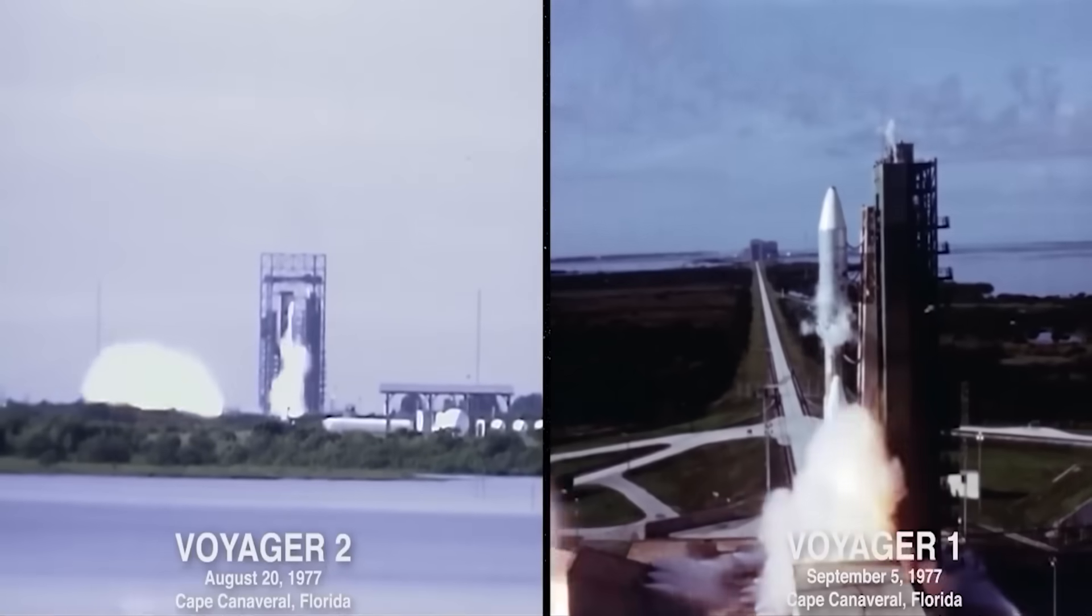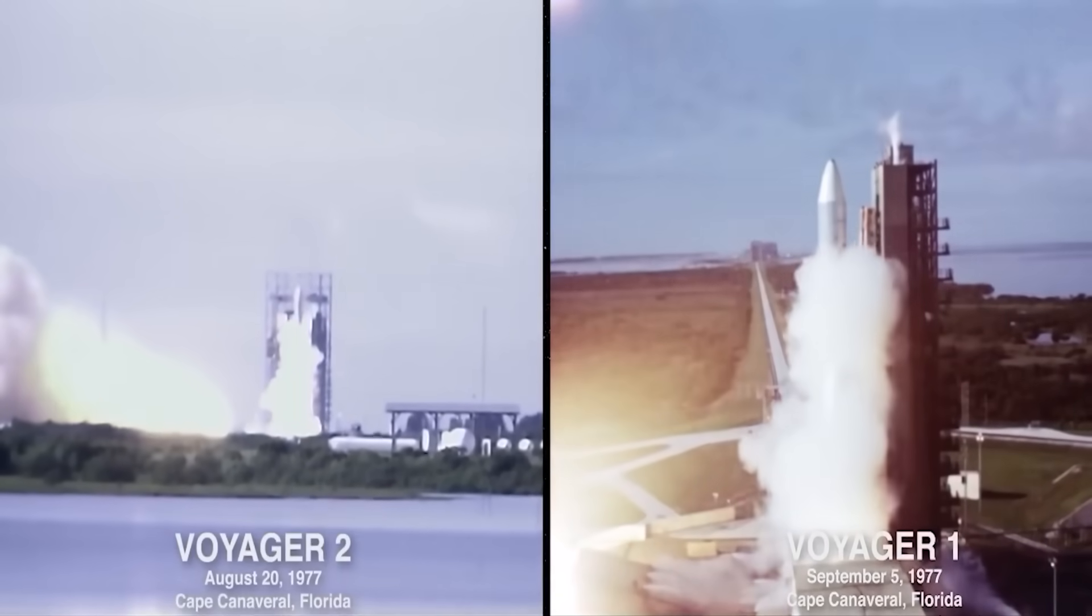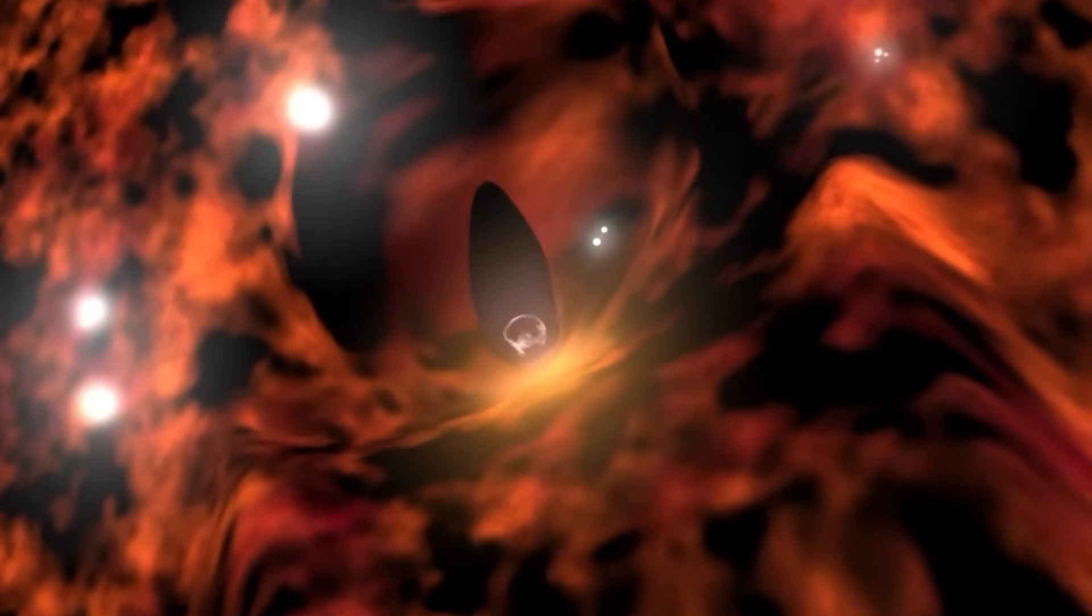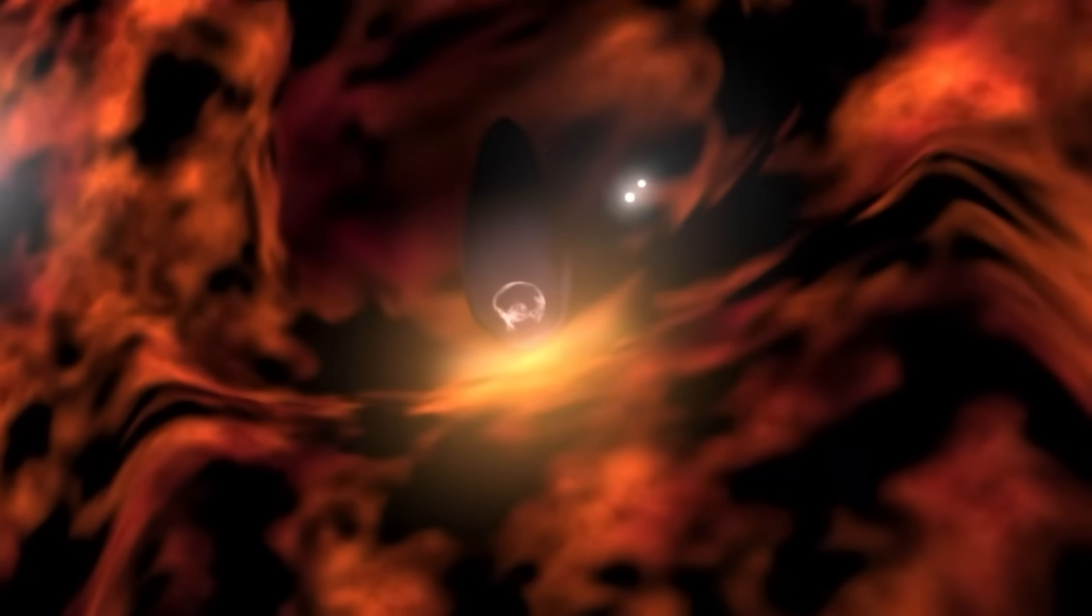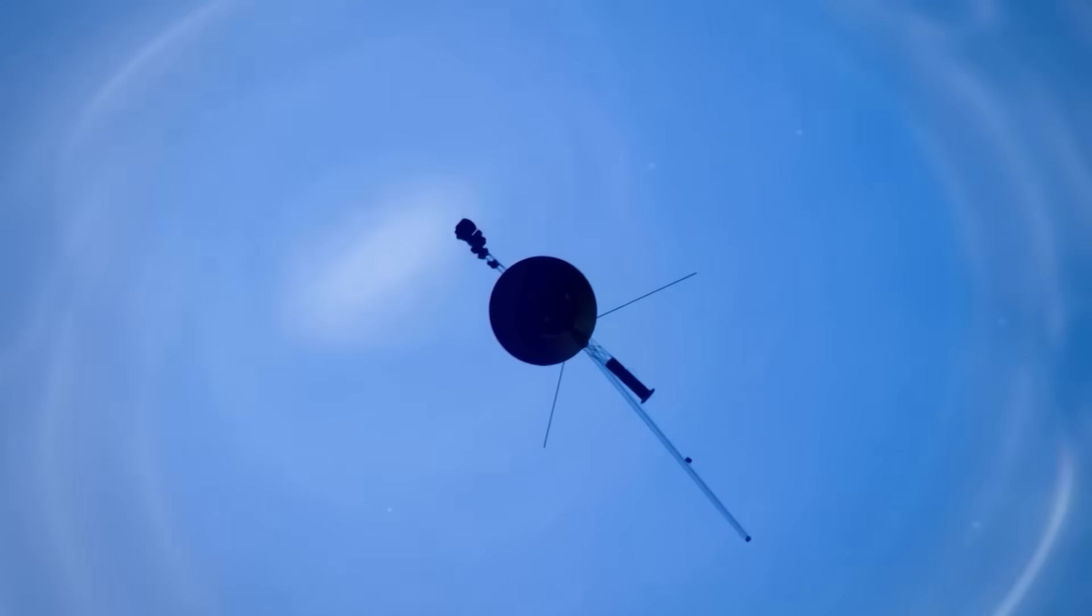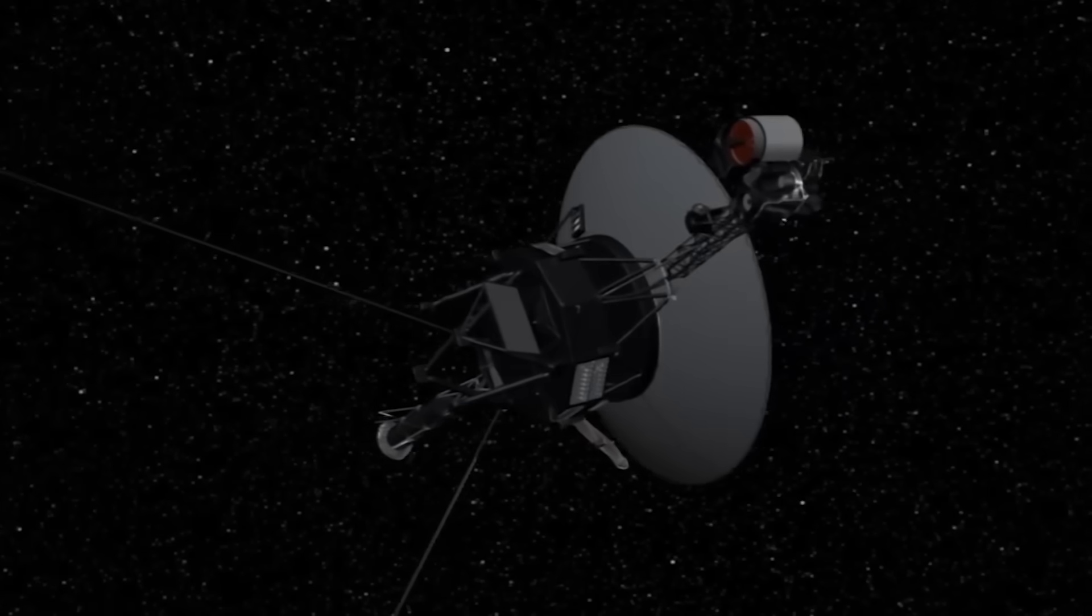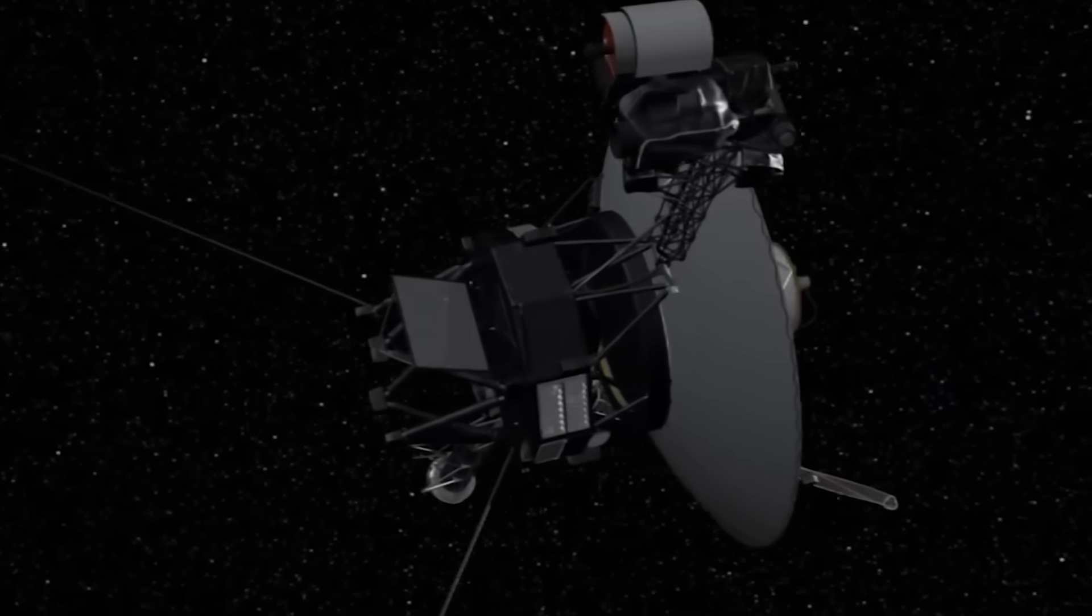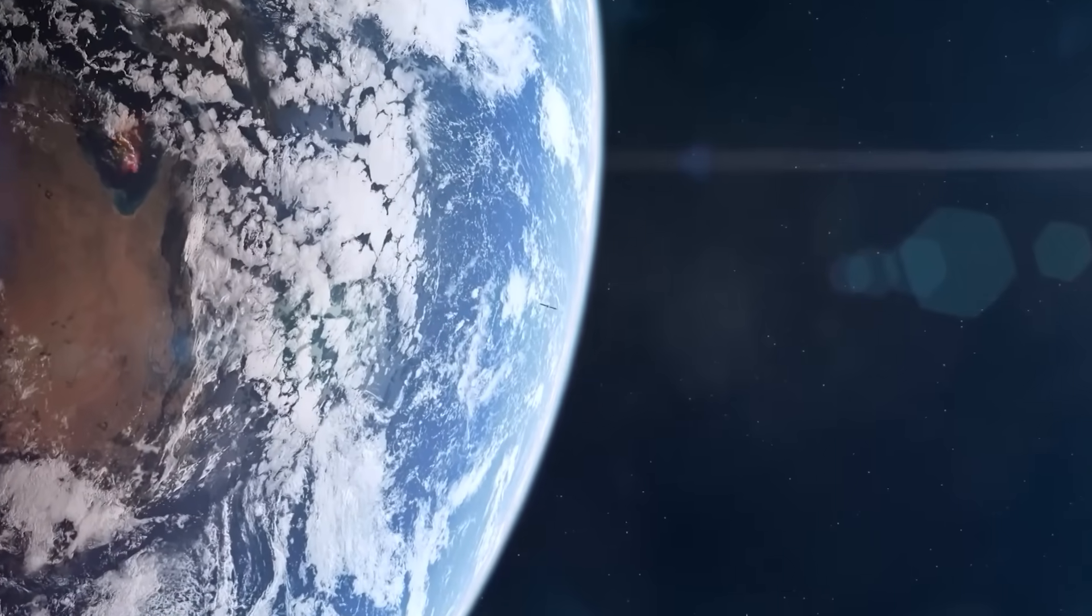The spacecraft, launched in 1977, had already crossed the boundary of the heliosphere, the bubble-like region of space dominated by the solar wind, and was well into interstellar space. This feat alone was monumental, placing Voyager 2 in a realm previously untouched by human instruments. However, it was what happened recently that transformed this already legendary mission into something even more extraordinary.